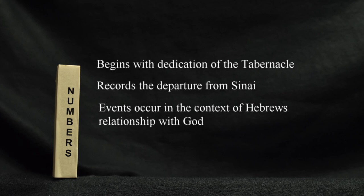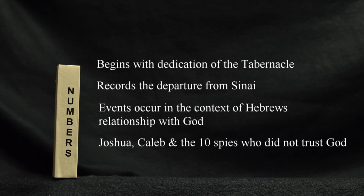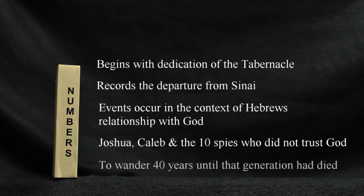When spies are sent to report on the land of Canaan, ten of them declare that they'll not be able to overcome the inhabitants. Only two of the spies, Joshua and Caleb, demonstrate their trust in God's word. The congregation responds negatively to the report of the ten spies, causing God to make them wander in the wilderness for forty years until all those who were twenty or older died.